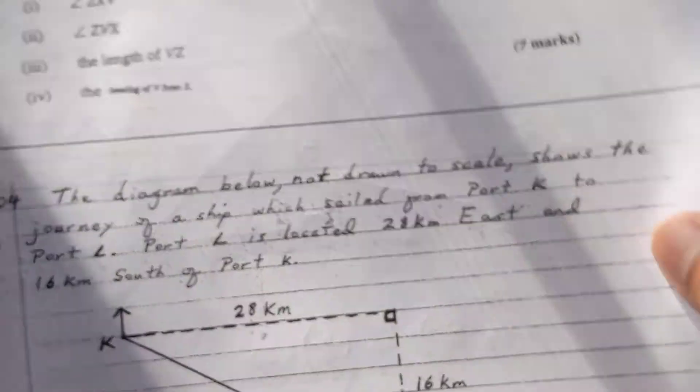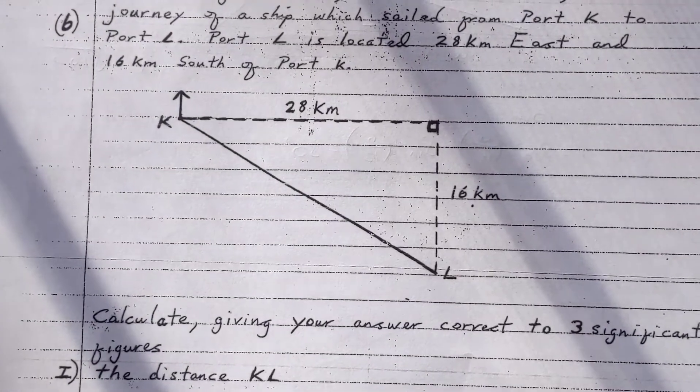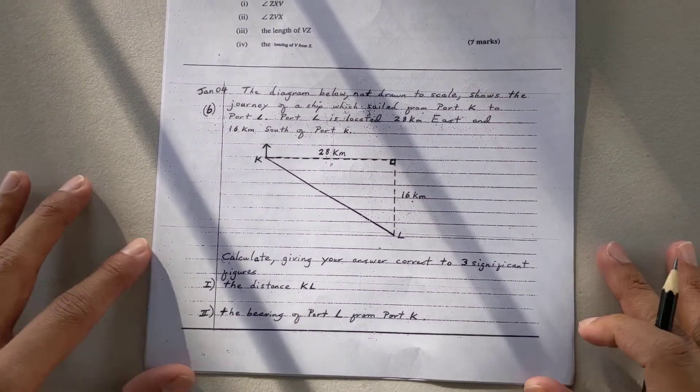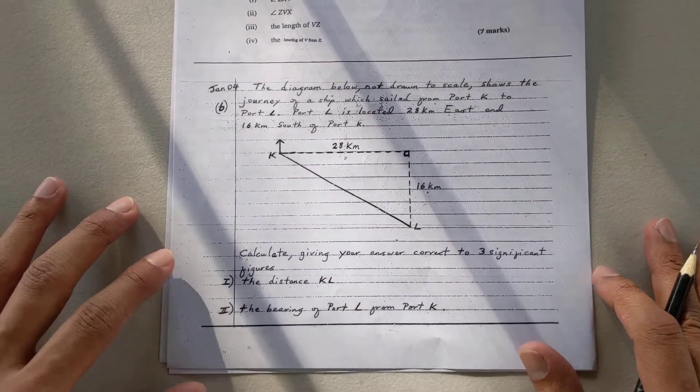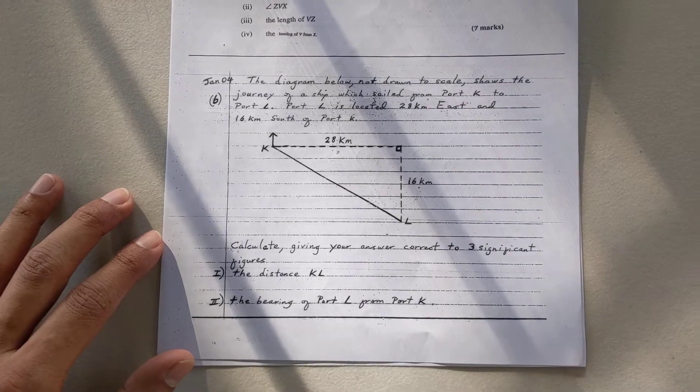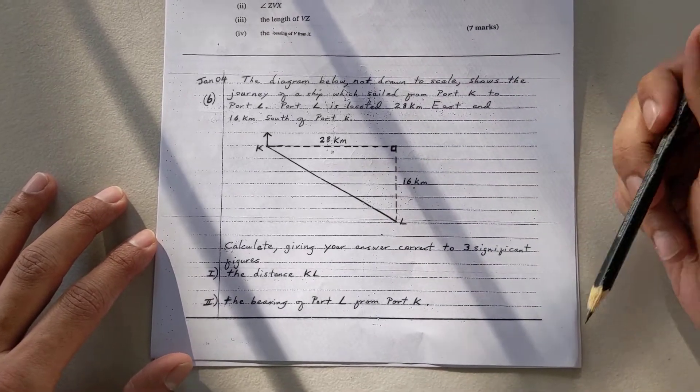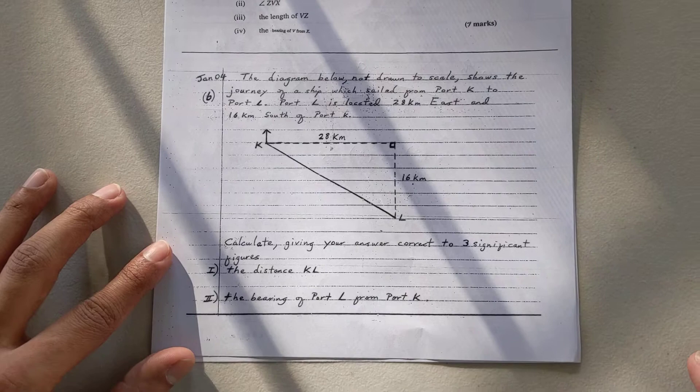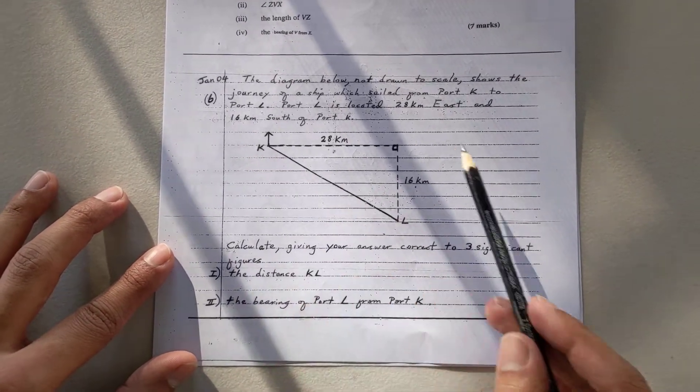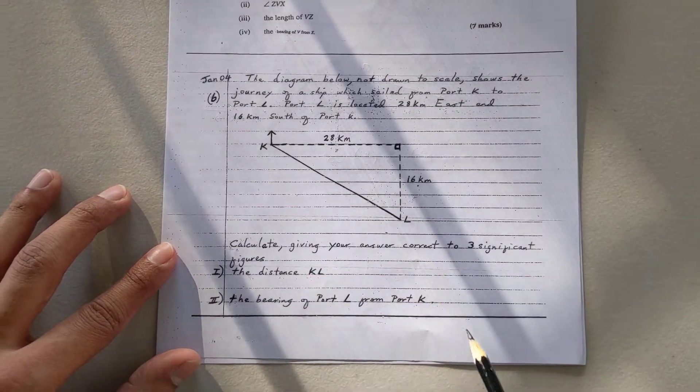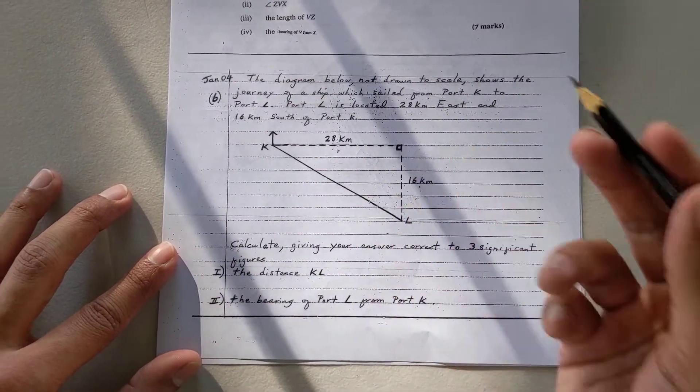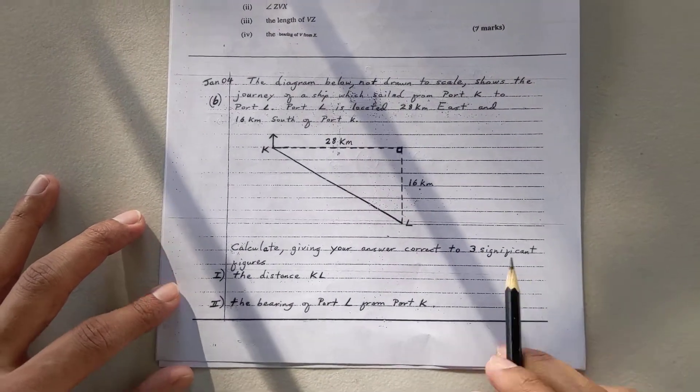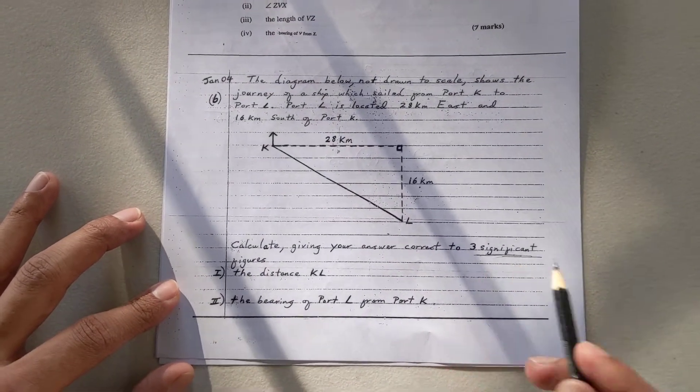I want to look at the next one with the bearings one time and incorporate it into this question here. So in this question, it's a bearings question. The diagram, they say not drawn to scale, meaning I can't just take a ruler and measure it. Obviously, this is not 16 kilometers. The journey of a ship which sailed from Port K to Port L, and they form a right-angled triangle there. Port L is 28 kilometers to the east, so they give you everything in the diagram already. I just have to calculate to the three significant figures, so they're rounding it off.